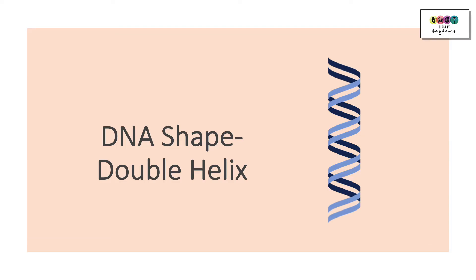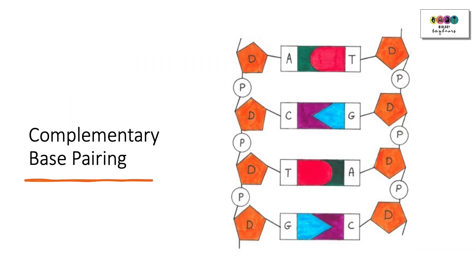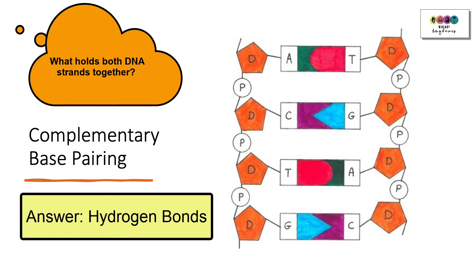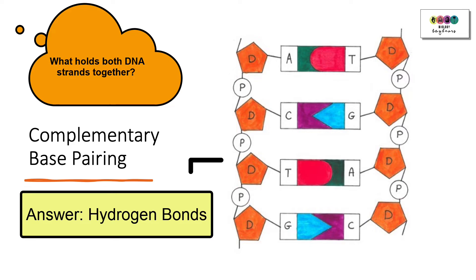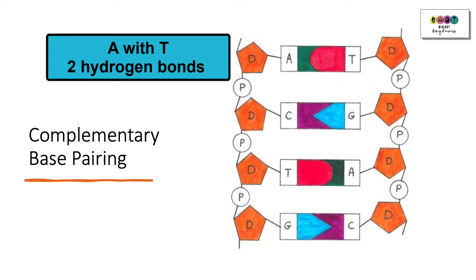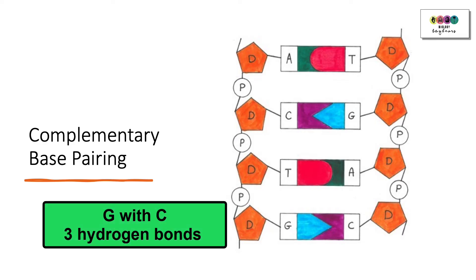DNA has a very particular shape — it's a double helix. You've got two long strands of nucleotides that wrap around into a helical shape. What keeps the two strands together is hydrogen bonding, and the hydrogen bonds are formed between complementary base pairs. Adenine will only ever bond with thymine, held together by two hydrogen bonds. Guanine and cytosine will only ever bond with each other, with three hydrogen bonds.